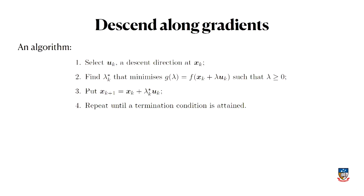Here's a good algorithm for finding the minimizer of a cost function. Let's say you're standing at some point x_k. A good algorithm would be to choose some descent direction starting from where you are, and then find some step length — that's the lambda_k. A particularly good step length would be the one that minimizes f of x_k plus lambda·u_k — the function value at your new location — making that as small as possible.